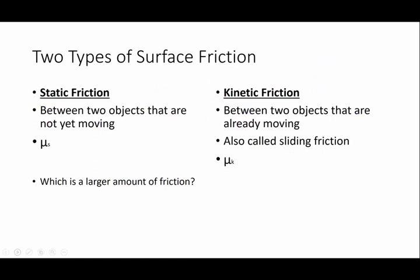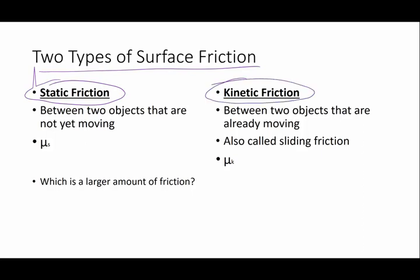There are two types of surface friction. One of them is called static friction, and the other one is called kinetic friction. And I like the words because just looking at the words, you know which one is which. Static is a situation where you've got friction between two objects that are not yet moving. If you think of something that is static, static means not moving. It means no motion. If you have a stagnant pond or pool, it is one where water is not moving.